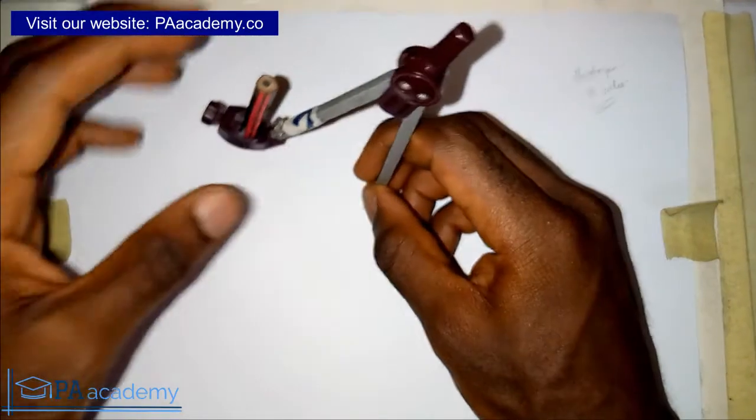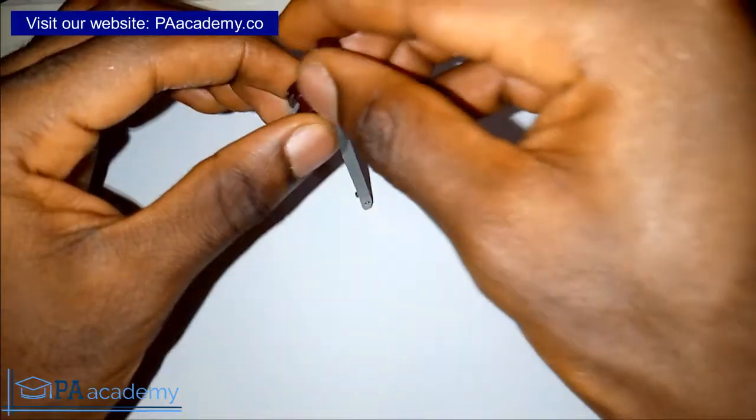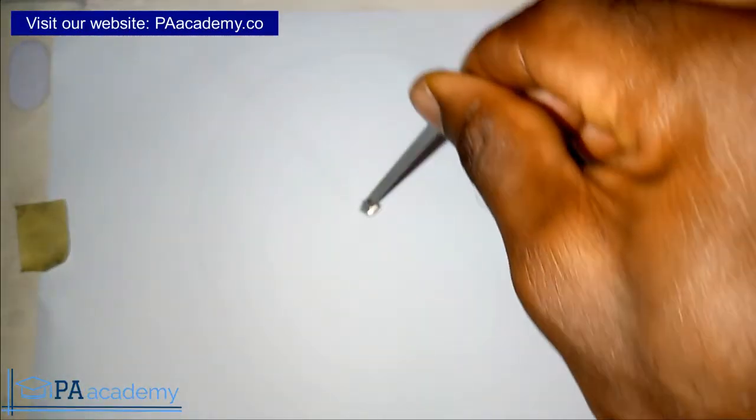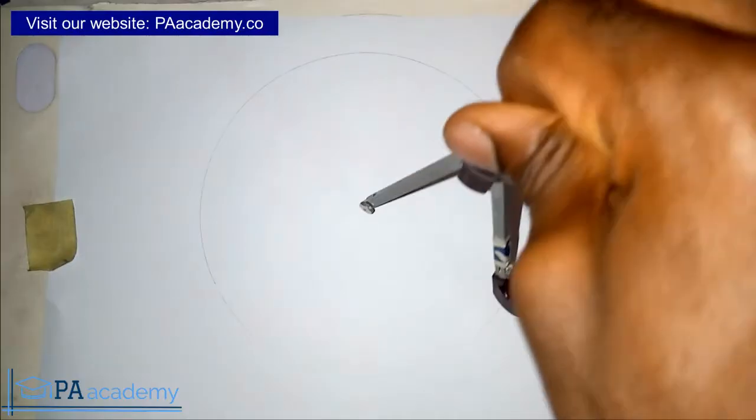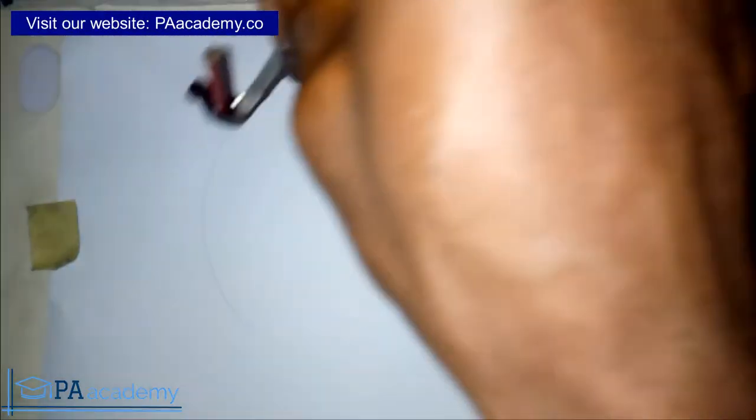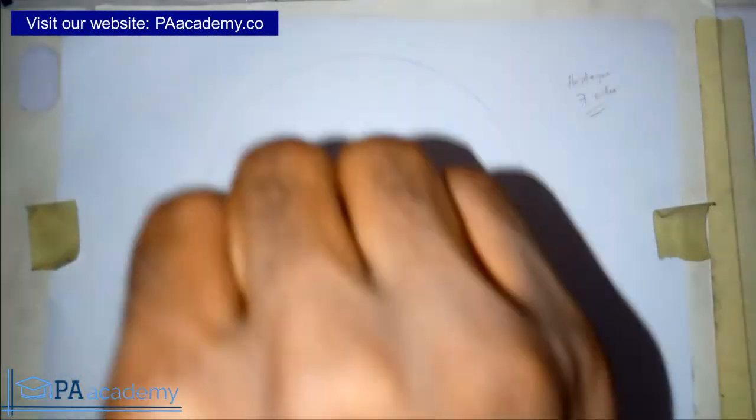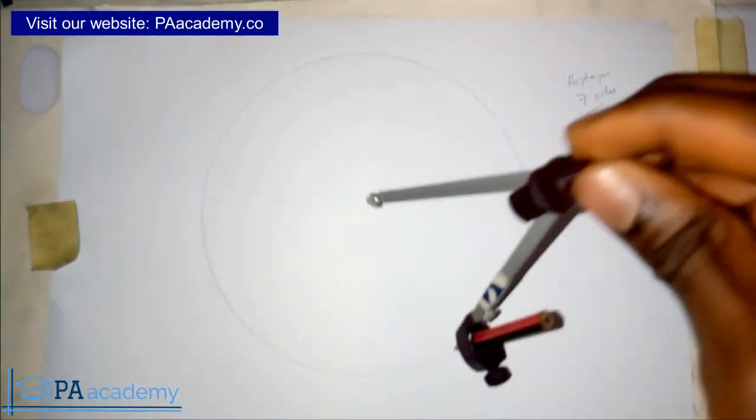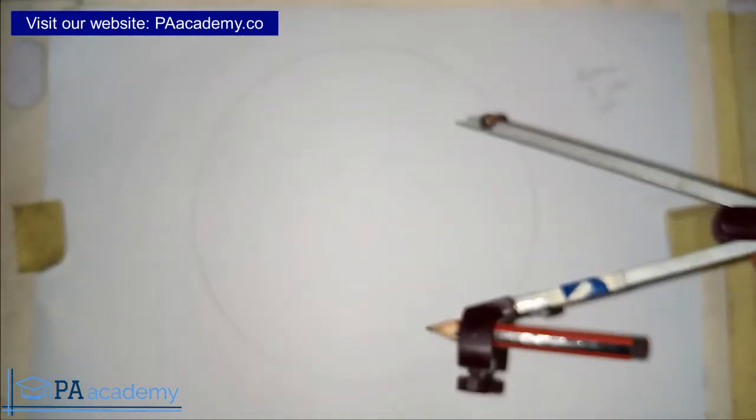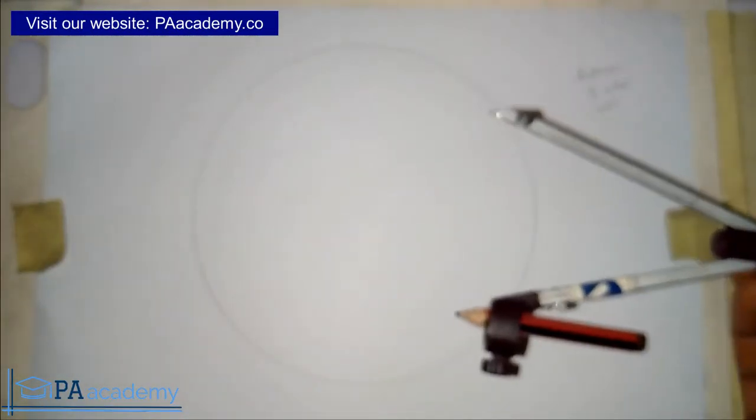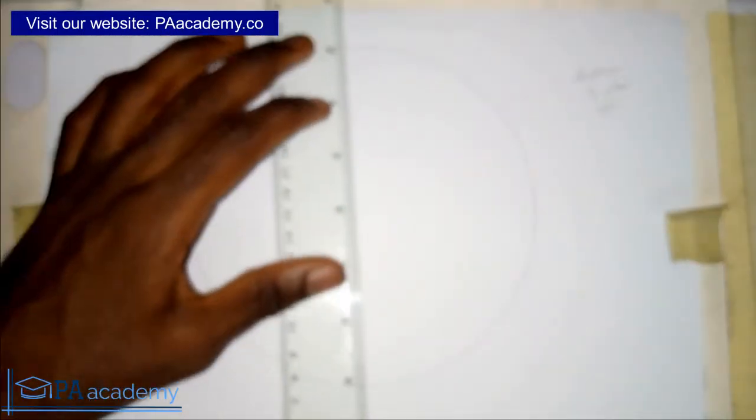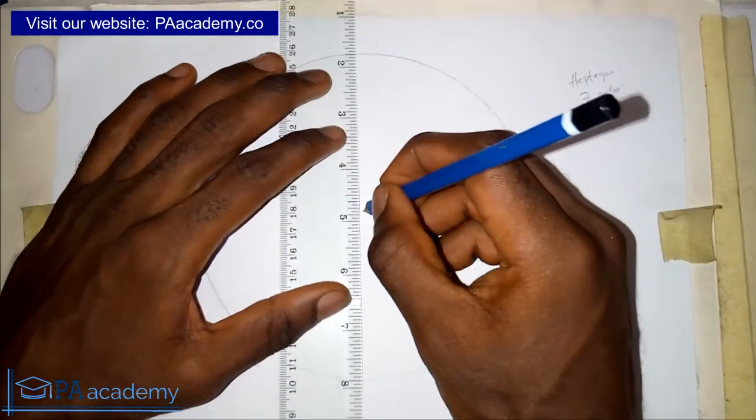The first thing we are going to do is draw a circle. Here I already have my circle. Just take note of the radius of the circle that you are using because you are still going to make use of it. The next thing you want to do is to draw a vertical line like I'm having here.